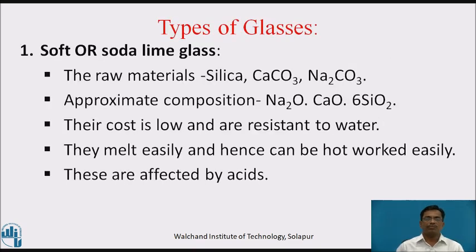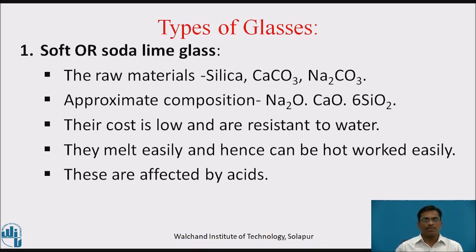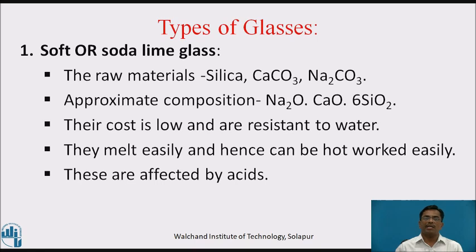Types of glasses. First, soft or sodalime glass. The raw materials used in the manufacturing of soft or sodalime glass are silica, calcium carbonate and sodium carbonate. Its approximate composition is Na2O, CaO, 6SiO2. Their cost is low and they are resistant to water. They melt easily and hence can be hot worked easily. These are affected by acids.